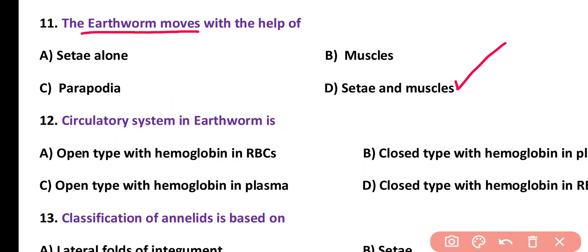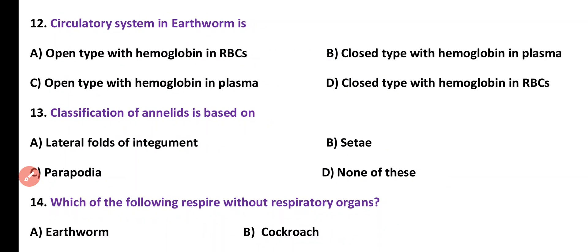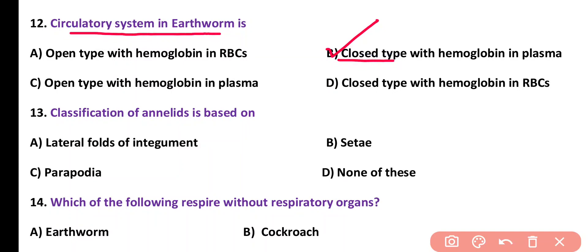Earthworm moves with the help of circular and longitudinal muscles and bristles which are known as setae. Question number 12. Circulatory system in earthworm is: open type with hemoglobin in red blood cells, closed type with hemoglobin in plasma, open type with hemoglobin in plasma, or closed type with hemoglobin in red blood cells. Correct answer is option B. Circulatory system of earthworm is closed type and hemoglobin is dissolved in the plasma.